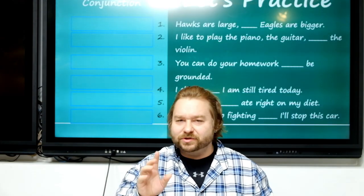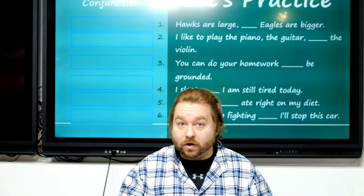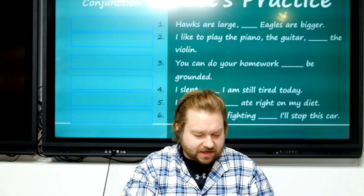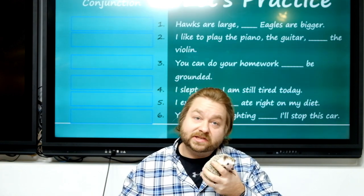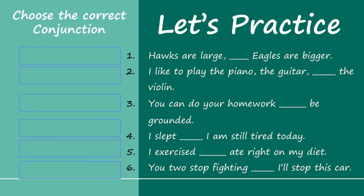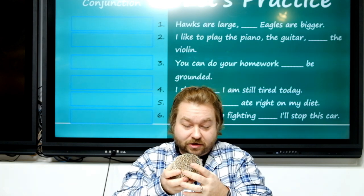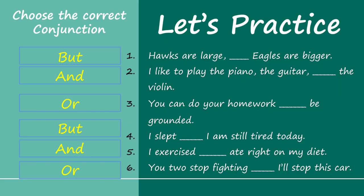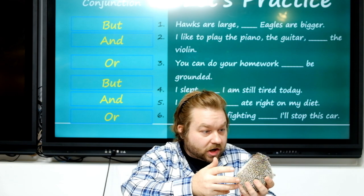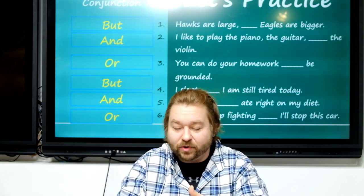Let's practice the three main conjunctions: 'and,' 'but,' and 'or.' Pause the video, answer the questions, and then we'll check them together. Number one: 'Hawks are large — eagles are bigger.' Hawks are large, but this other thing is bigger. So the answer is 'but' — hawks are large, but eagles are much bigger.